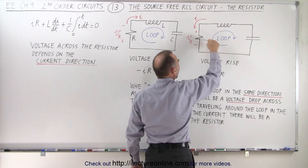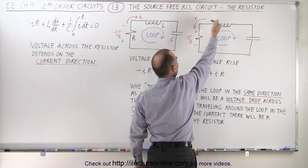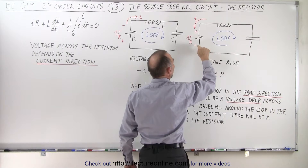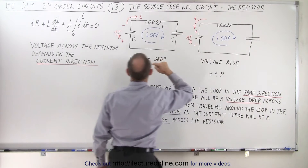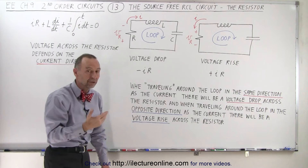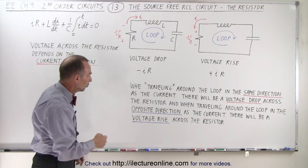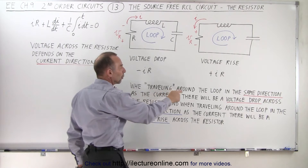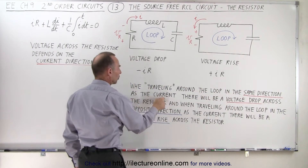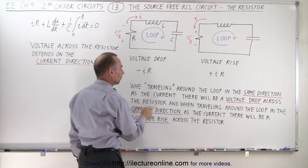So we can see that if we travel around the loop in a clockwise direction and the current is in the opposite counterclockwise direction, then we have a voltage rise when we travel across the resistor. Here we have a voltage drop when we travel across the resistor. So we can summarize it as follows: when traveling around the loop in the same direction as the current, there will be a voltage drop across the resistor.